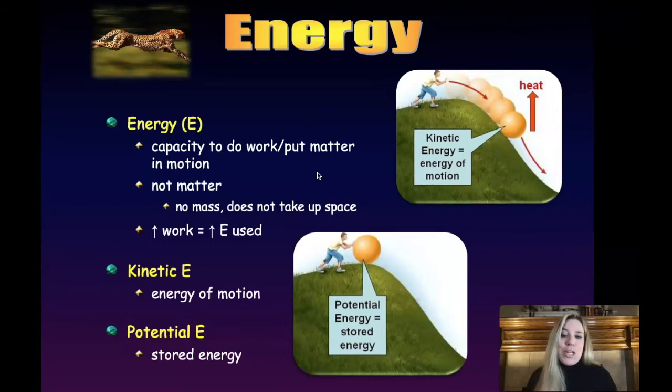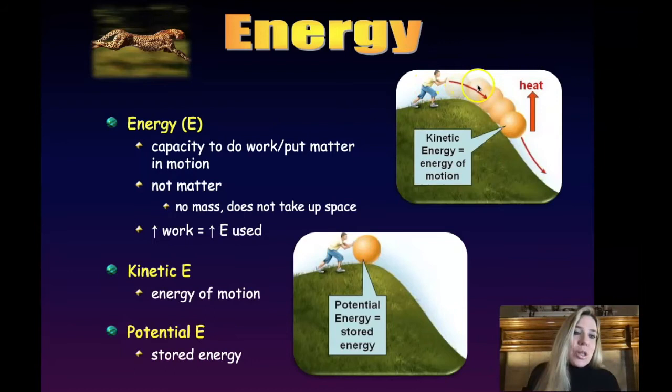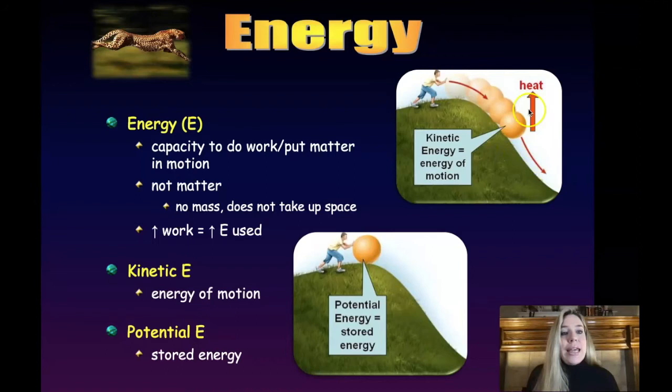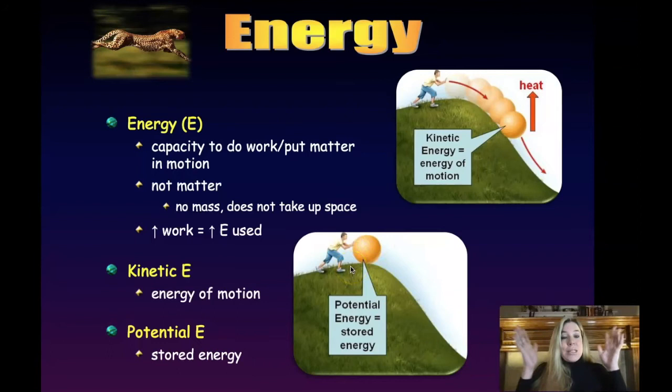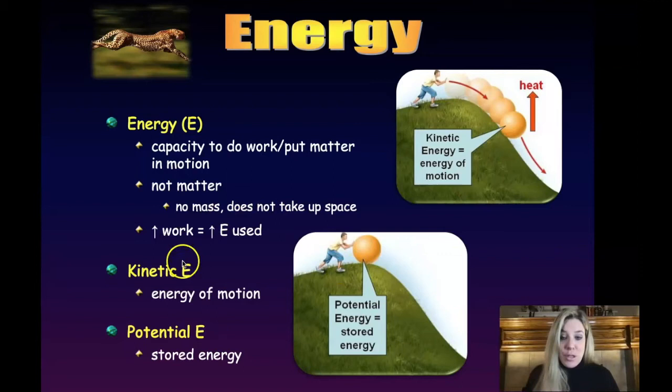We can break energy down into two categories. Kinetic energy is the energy of motion — like a ball rolling down a hill. When kinetic energy is occurring, energy is also going to be lost to the system in the form of heat. The opposite of kinetic energy is potential energy — like a ball at the top of a hill before it starts rolling. It has the potential to do work, but that energy hasn't been activated into kinetic energy yet. So potential energy is stored energy, and kinetic energy is the energy of motion.